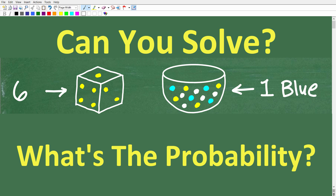There are things that are even much more interesting than this, but let me give you the problem. Here we have a die, and here we have a jar of marbles. What's the probability of rolling this die and it landing on a 6, and then pulling out one blue marble from this jar? The jar has different colored marbles — some blue marbles, yellow marbles, and white marbles. So we want to know: what is the probability of rolling this die, getting a 6, and getting one blue marble?